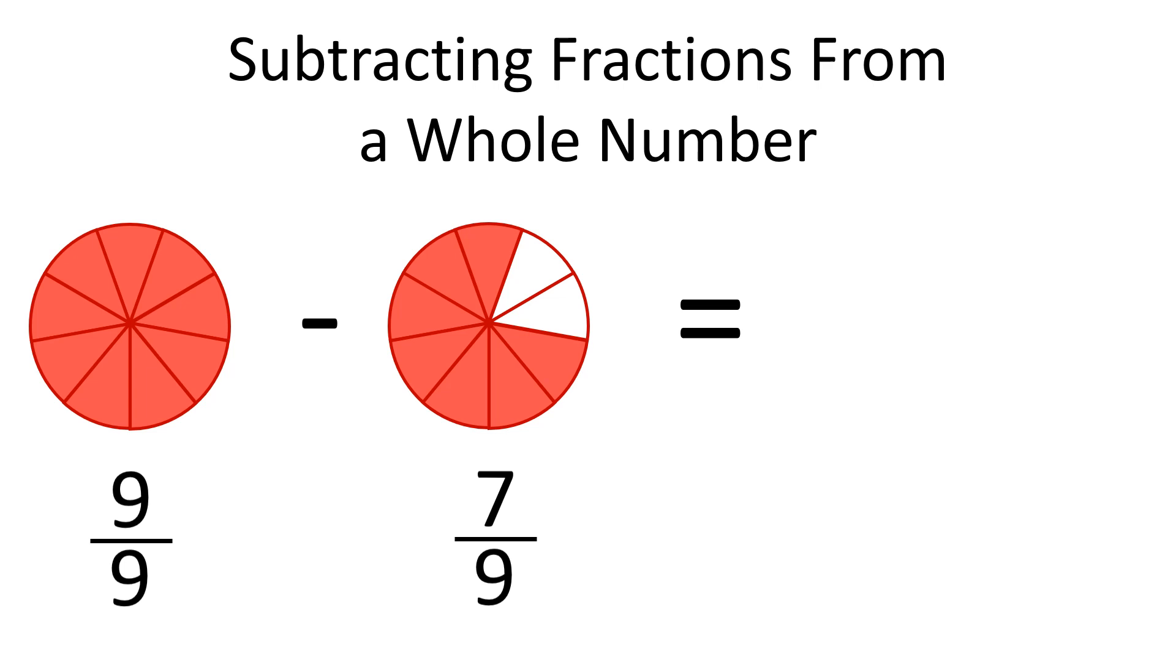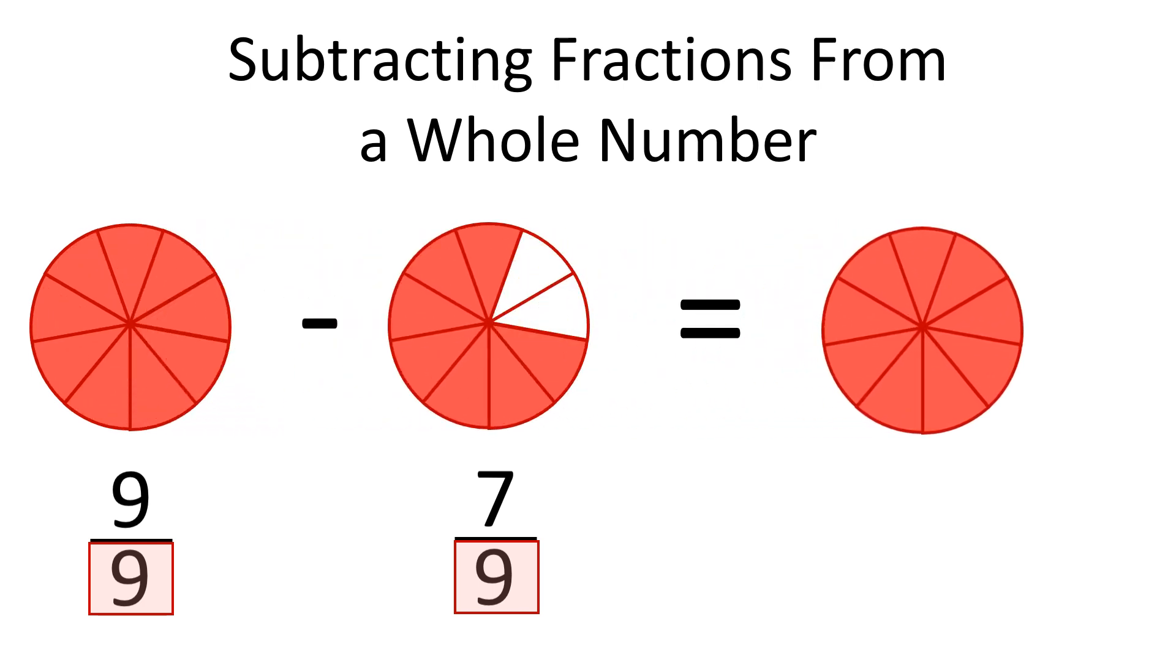Since both fractions have the same denominator, we only need to subtract the numerators. So, from 9 parts, we subtract 7 parts and what is left is 2 parts out of a total of 9 parts. So, the answer is 2 over 9.